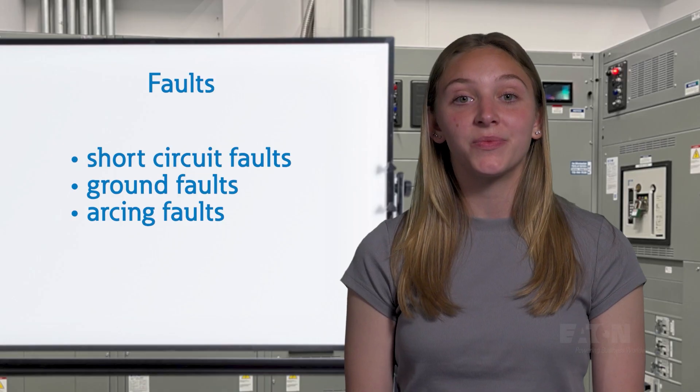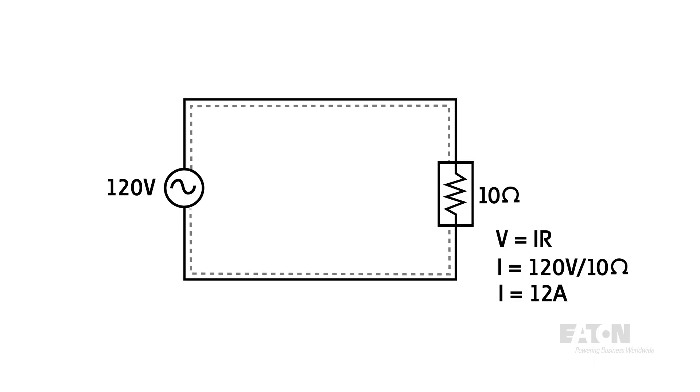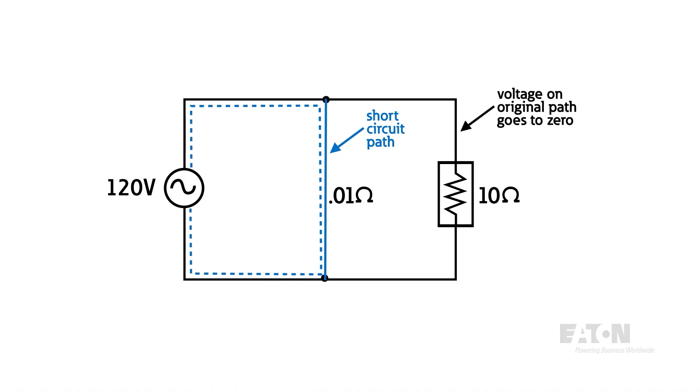The term short circuit means exactly what the name says. Instead of electricity flowing along the intended path through a load, it's suddenly given an easier, low impedance path around it. This can happen in any power system.